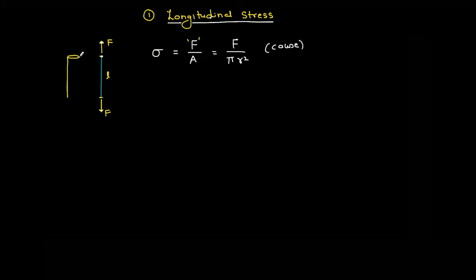The cause cannot simply be force, because if I use a thicker wire of the same length and apply the same force, the same cause should give the same effect. A thinner wire gives more deformation for the same force, so force alone is not the cause. But if I divide force by the cross-sectional area, then force per unit area is lesser for the thicker wire, which is why the effect — the deformation — is also lesser. So the cause is defined as force per unit area: F divided by pi R squared.